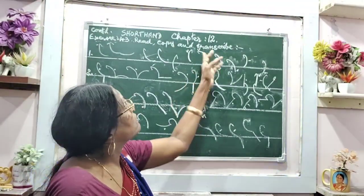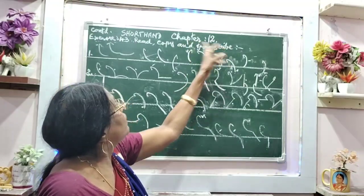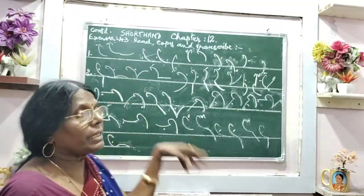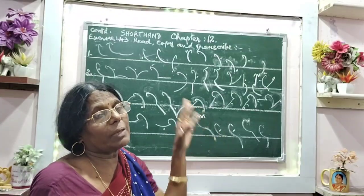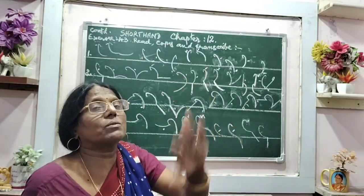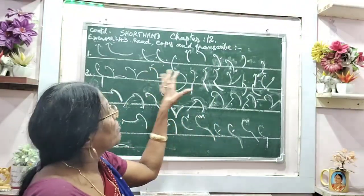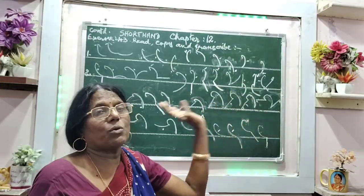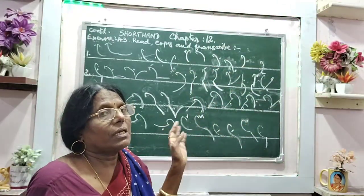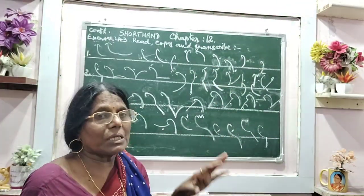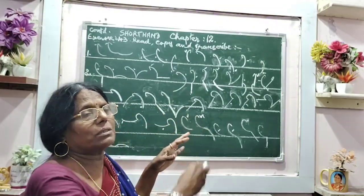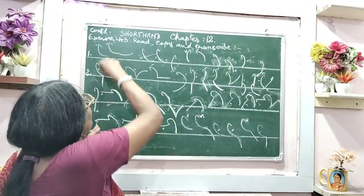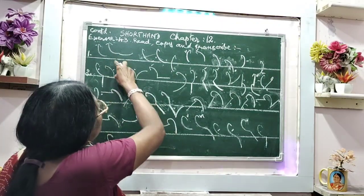Let us have shortened Chapter 12, Exercise 43. There are 8 but I am giving you 4 here, and 4 in the other one, because the R book and L book have opposite ways of writing. To make it clear, I am writing only 4 here. I am reading them for you.